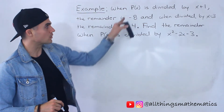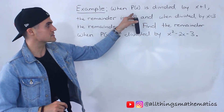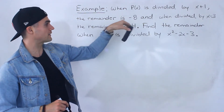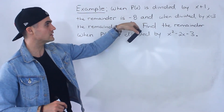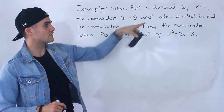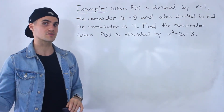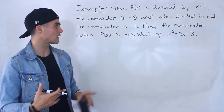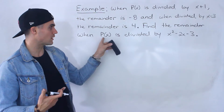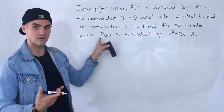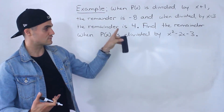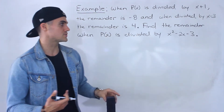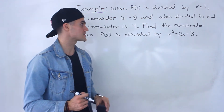If we take some polynomial p of x, and if we divide it by x plus one, the remainder is negative eight. When it's divided by x minus three, the remainder is four. And we have to find the remainder when that same polynomial p of x is divided by x squared minus two x minus three.